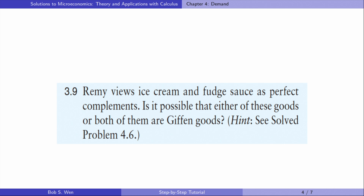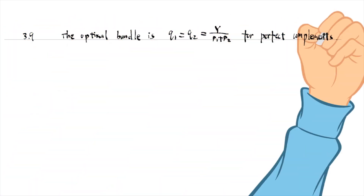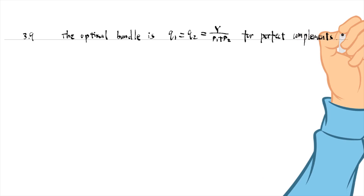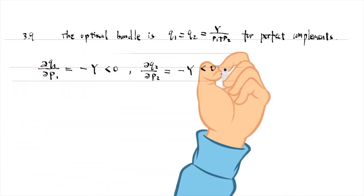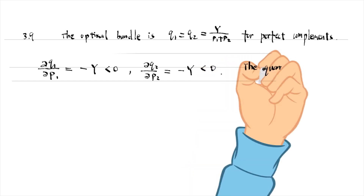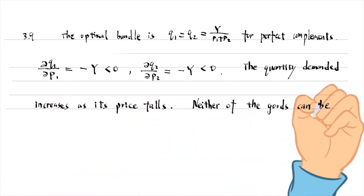Let's solve exercise 3.9. The consumer uses ice cream and fudge sauce as perfect complements. Is it possible that either of these goods or both of them are Giffen goods? For perfect complements, the optimal bundle is Q1 equals Q2 equals Y divided by (P1 plus P2). The partial derivative shows that the quantity demanded and the own price move in opposite directions — the quantity increases as the good's price falls. Neither of the goods can be a Giffen good.